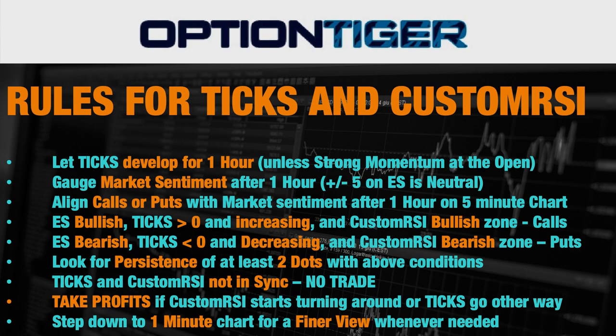Once that 45 minutes to one hour has passed, you want to gauge the market sentiment — by that point the ticks will probably tell you which side of the market it wants to go. Bear in mind, when the ES is within plus or minus 5 points of the flat line, that's considered neutral. The average true range for the S&P on a daily basis is about 15 points, so if the market stays within plus or minus 5 points, that's a neutral day and you'll need to be a little more patient.